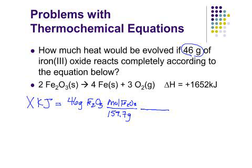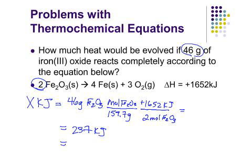And then I know from the balanced equation that for every two moles of Fe2O3, that 1652 kilojoules are released. I've got that positive sign. My answer should include the sign in that sign convention. And when I do that out, I have 237 kilojoules. How many sig figs am I allowed in my answer? Two. So I have to record that as 240 kilojoules.